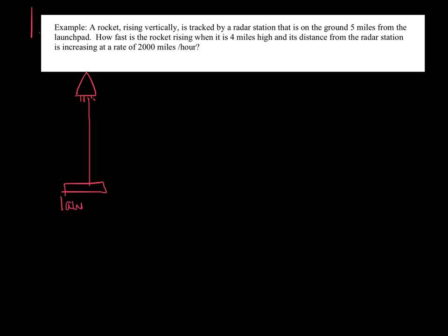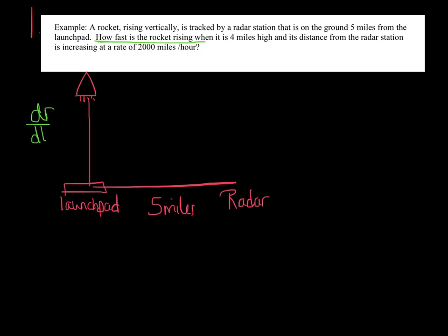It says a rocket is rising vertically — there's my rocket shooting off vertically. It's tracked by a radar station that is five miles from the launch pad. I'm going to label this the launch pad, and the radar station is five miles away on the ground. Our question is: how fast is the rocket rising? So I'm looking for dR/dt — R for rocket. How fast is the rocket rising — you can think of that as the velocity, the rate at which it's rising.